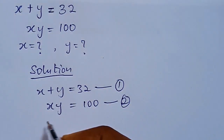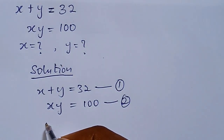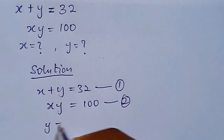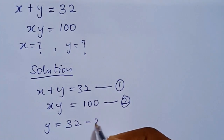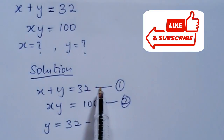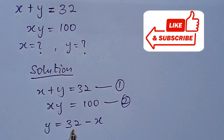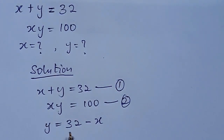From equation 1, y can be expressed as 32 minus x — flipping x to the right-hand side gives us y equals 32 minus x. From this, we can now substitute y into equation 2.